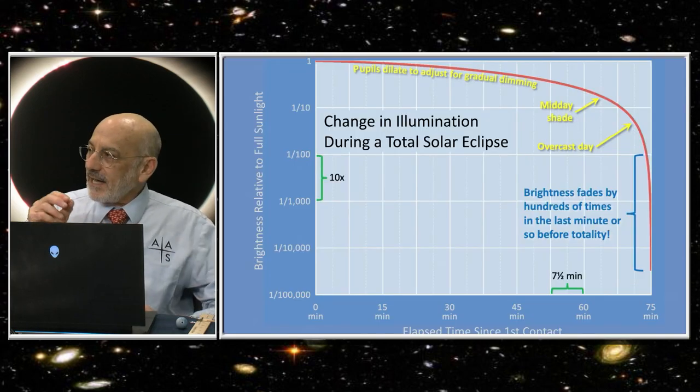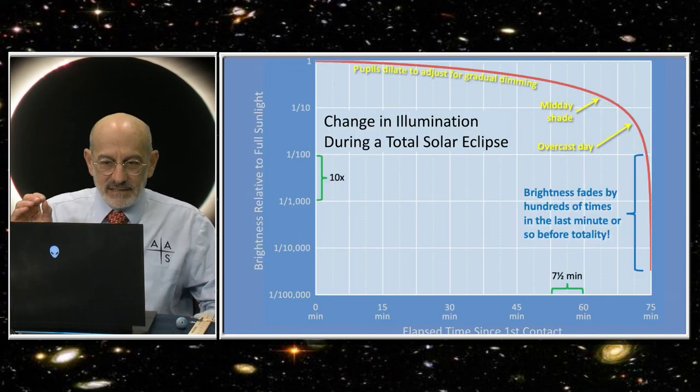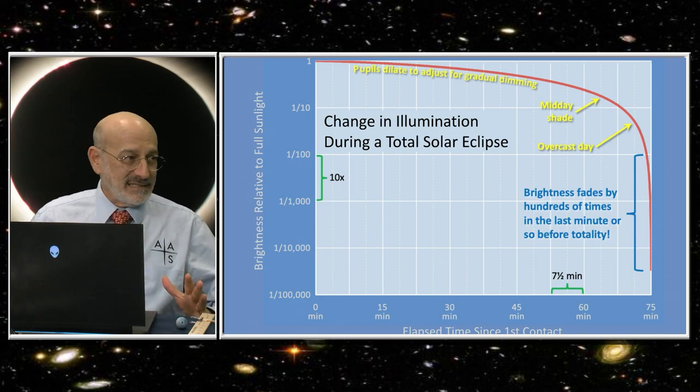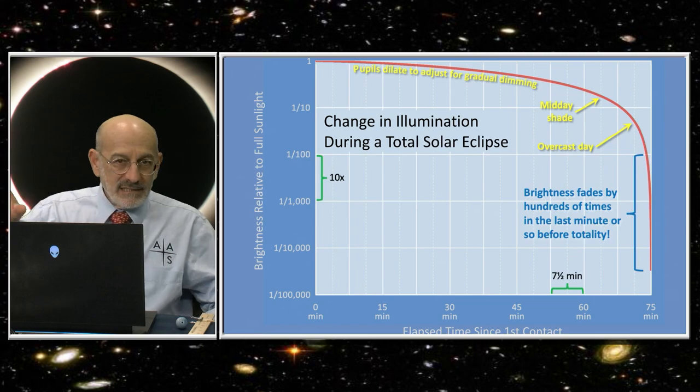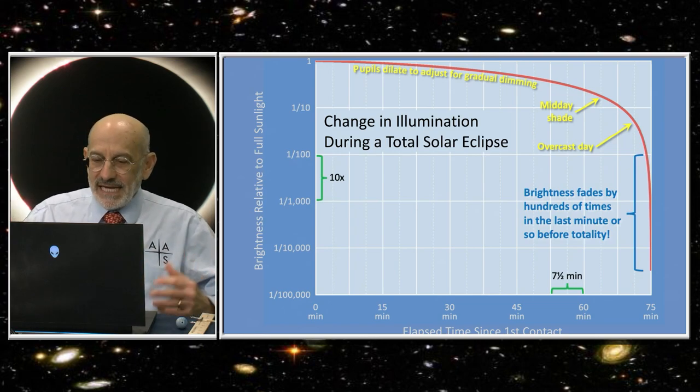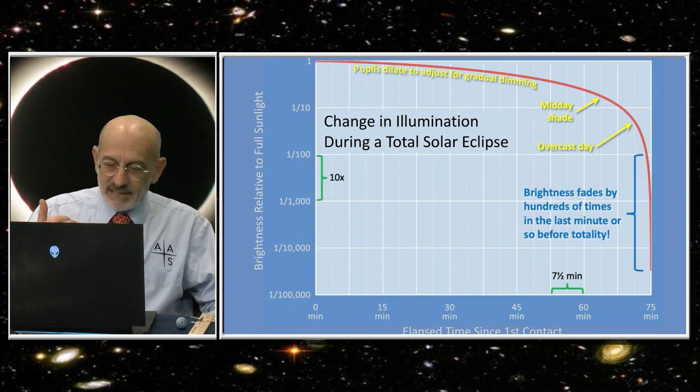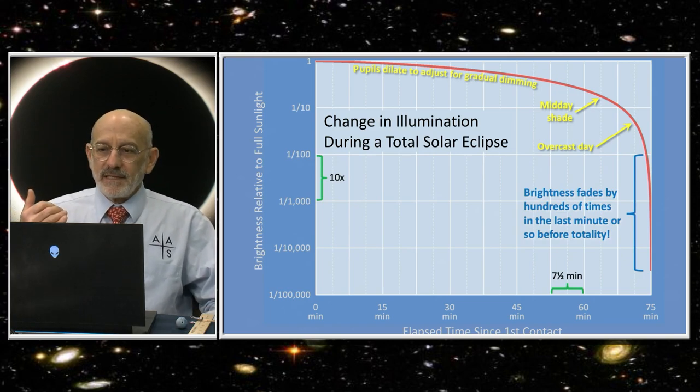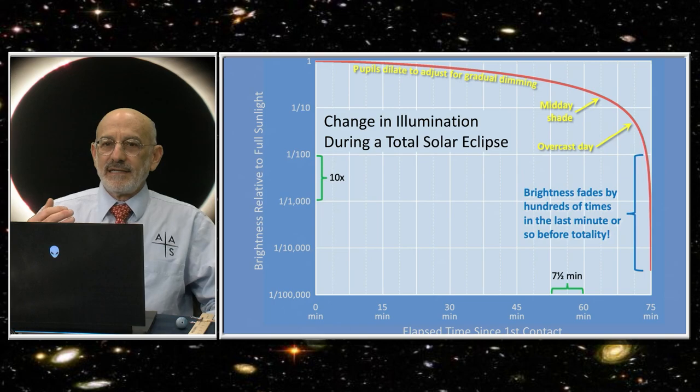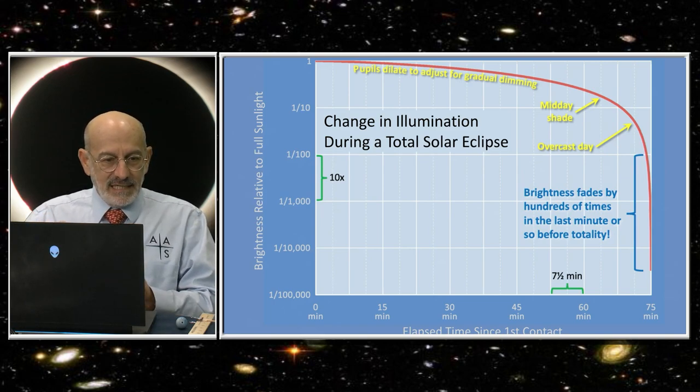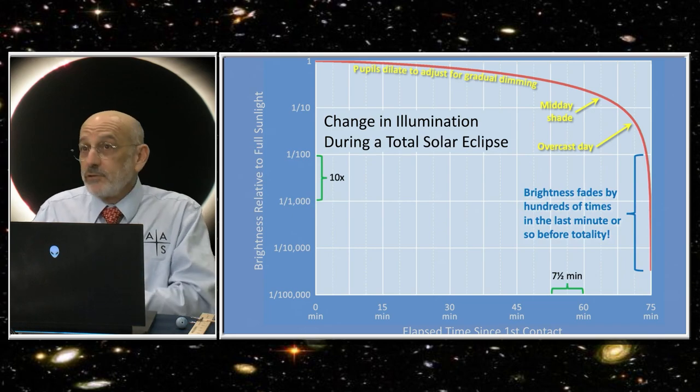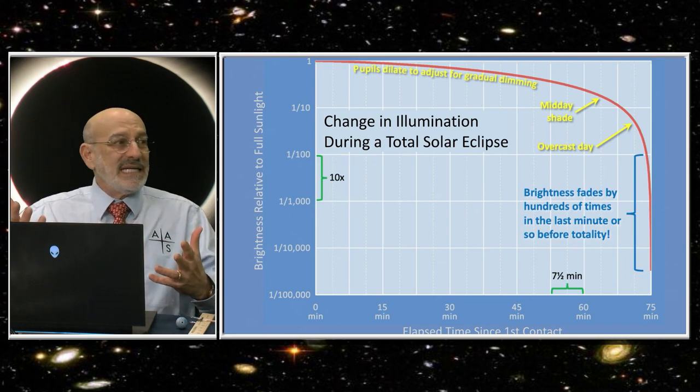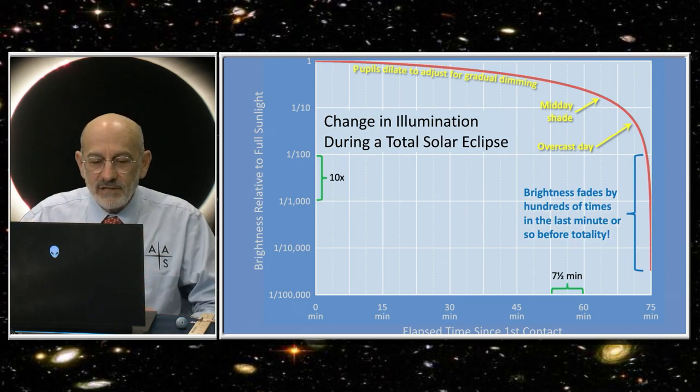The next slide shows how incredibly fast the bottom drops out of the sunlight right before totality. It takes an hour to get as dark as an overcast day, and then in the last minute it gets hundreds of times darker. It's really dramatic. The same thing of course happens again at the very end of totality. It's like the sun rose and jumped up into the sky in a minute. It's just incredibly dramatic.